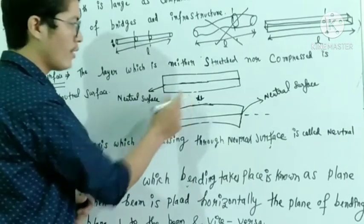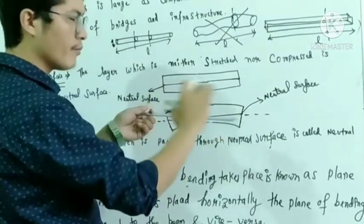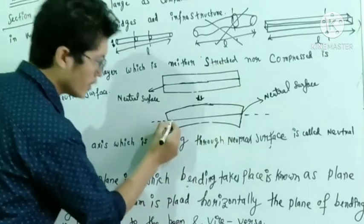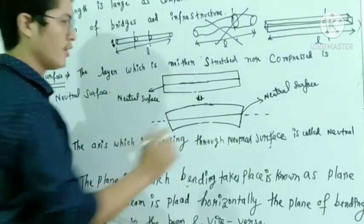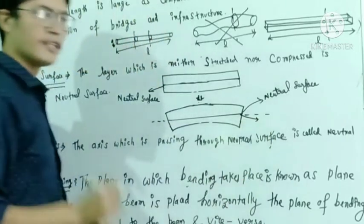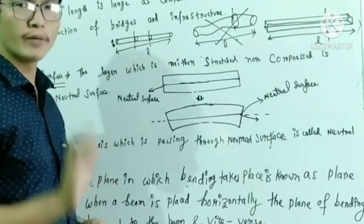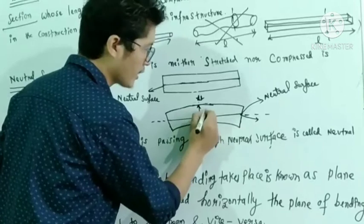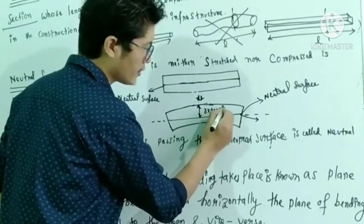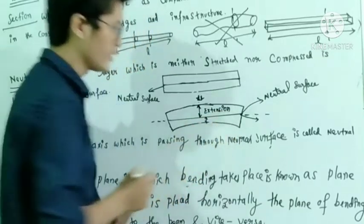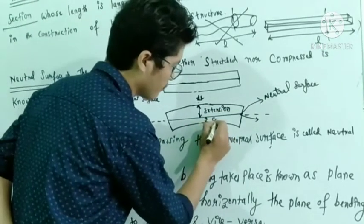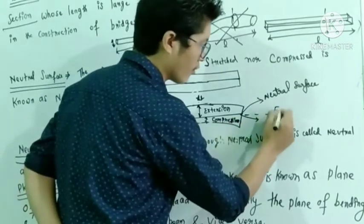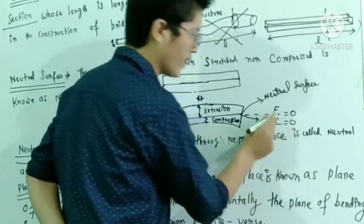When you are bending this rectangular beam, the upper layers undergo compression and the lower layers undergo extension. After the central surface, compression occurs. But in the neutral surface, the extension and compression are both zero.